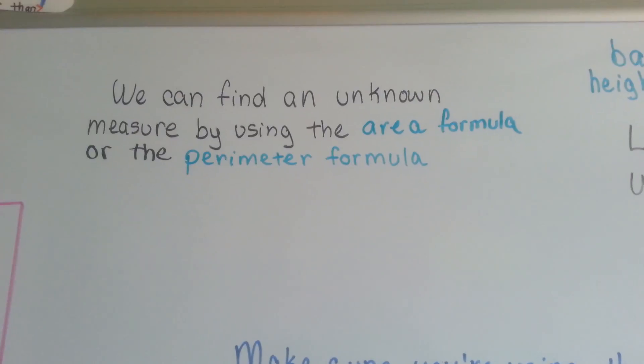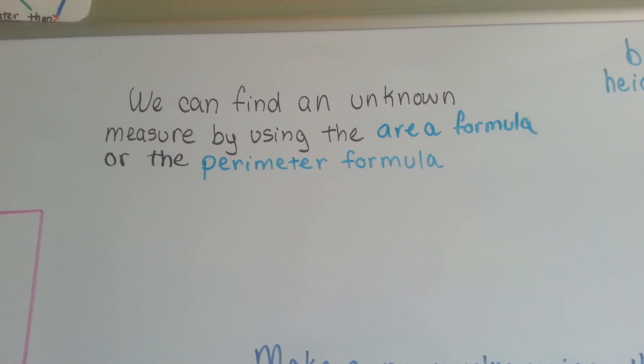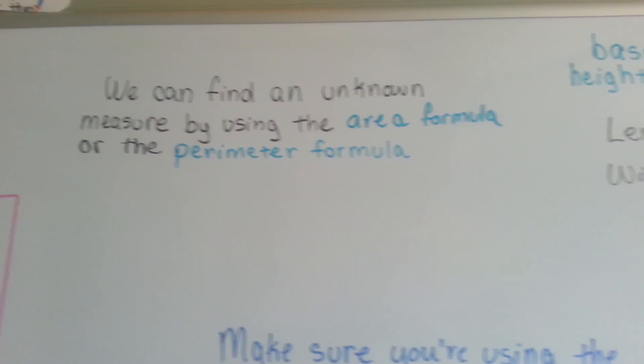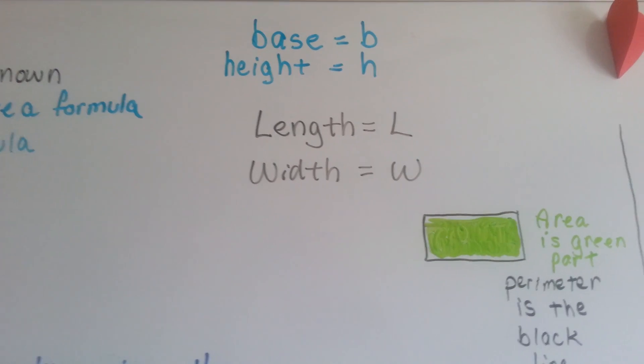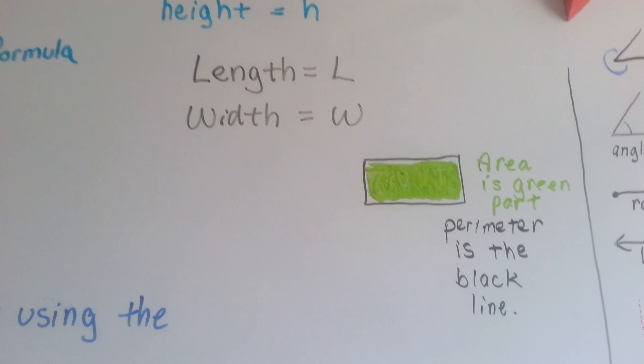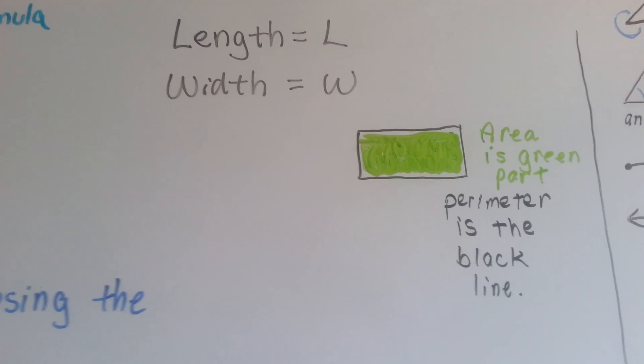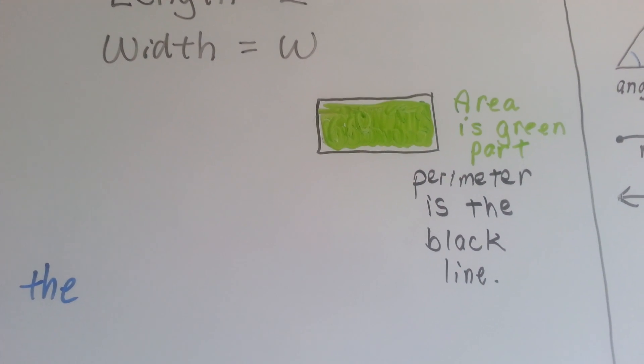We can find an unknown measure by using the area formula or the perimeter formula. Do you remember that base is B, height is H, length is L and width is W? Do you remember that area is the green part of this box and perimeter is the black line around it?